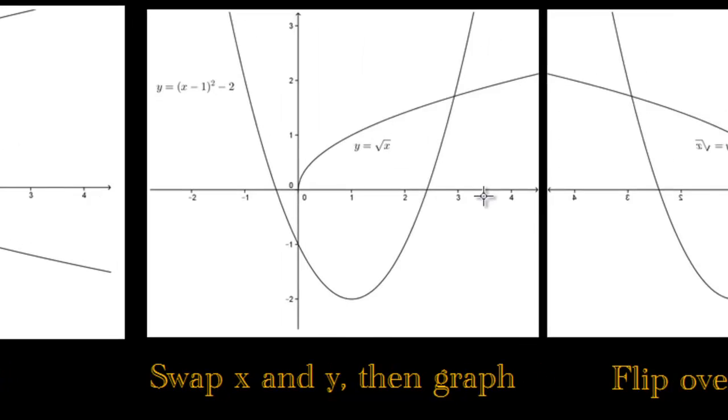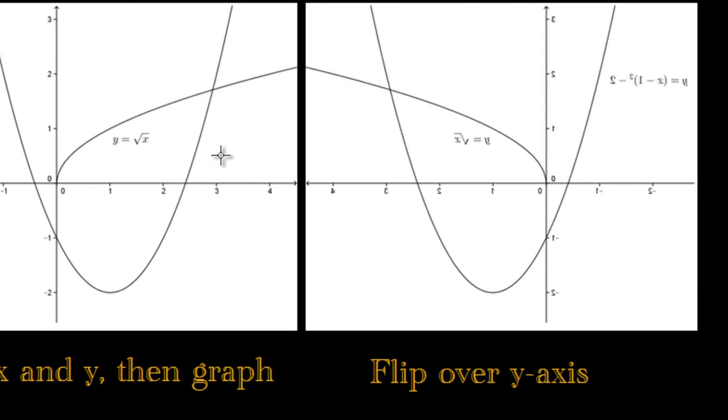After that, you're going to flip over the y-axis. So if you're doing this on a sheet of paper, you would just simply turn over your sheet of paper. And you'll get something that looks like this. Now, if you're doing this on paper, the graph is going to be underneath. So all you can see through the paper, but this is what it would look like.